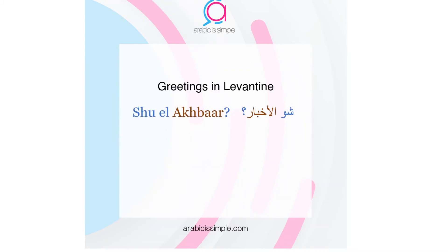Another way is to ask about the news of the person. You say 'shoo,' which is a question tool meaning 'what.' 'Il' again means 'the,' and the word 'akhbar' means 'news.' So you say 'shoo l-akhbar' — what's the news, or what's up?